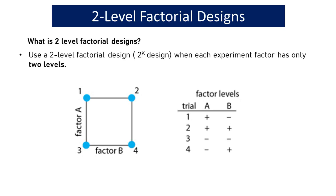Use a two-level factorial design when each experiment factor has only two levels. Using a two-level factorial design allows researchers to efficiently study the impact of multiple factors at two levels each, helping to identify which factors are significant and how they interact with each other.